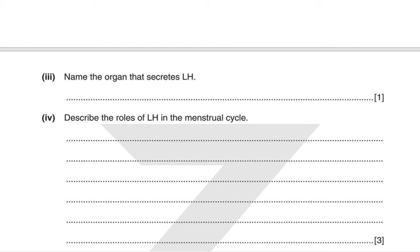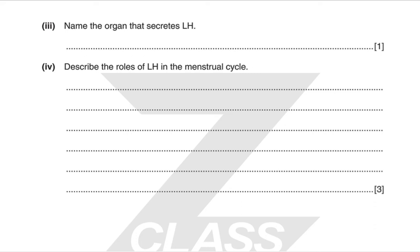Describe the roles of LH in the menstrual cycle. Initially, luteinizing hormone stimulates the follicle, which secretes oestrogen. When oestrogen concentration reaches around four times its initial concentration, it triggers a surge in LH secretion, which in turn stimulates ovulation. Afterwards, the development of the corpus luteum is stimulated, which secretes progesterone. However, progesterone has a negative feedback on luteinizing hormone, so the corpus luteum degenerates and menstruation is set.